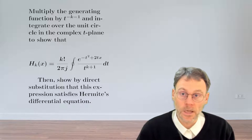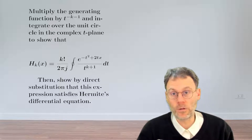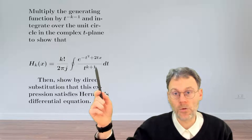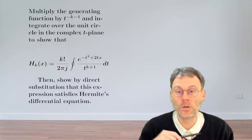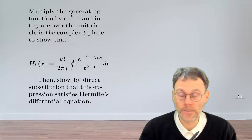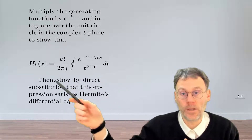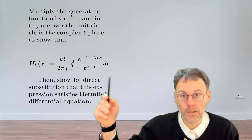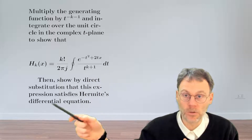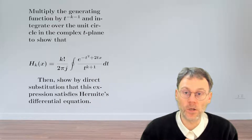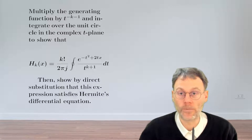The aim of this exercise is twofold: first, try to derive this integral representation for the Hermite polynomial of order n, and then as a bonus, use this integral representation to directly substitute into the differential equation and see if you end up with zero.